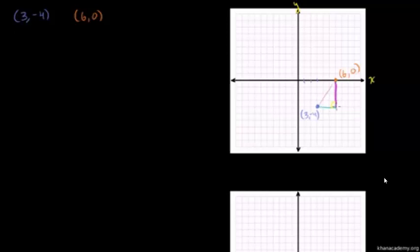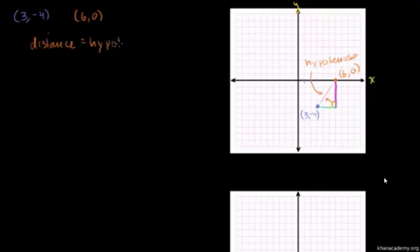So if we could just figure out what the base length is and what the height is, we could use the Pythagorean theorem to figure out the long side — the side opposite the right angle — the hypotenuse. The distance is the hypotenuse of this right triangle.